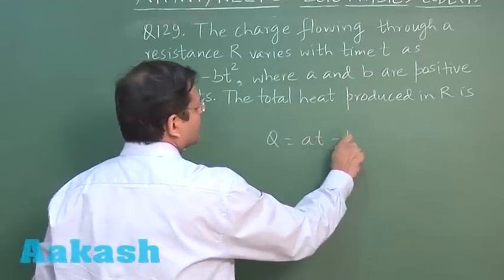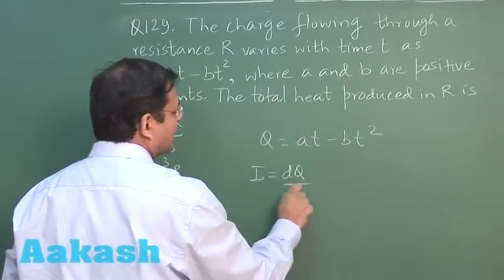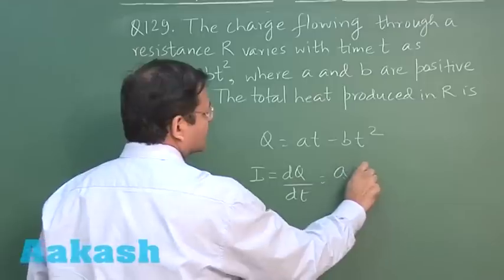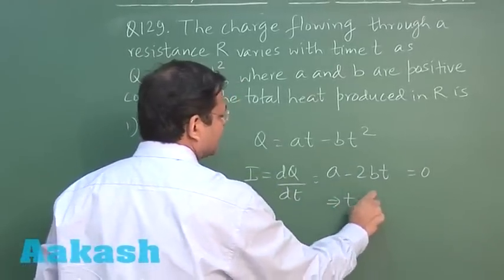You can differentiate and get the value of i as dq by dt. This is equal to a minus 2bt. If you make it equal to zero, you can also get the time for which the current is flowing.